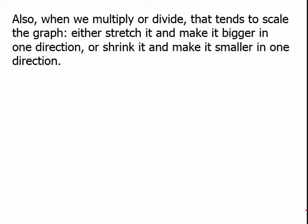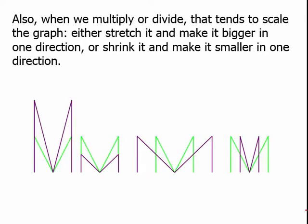When we multiply or divide, that tends to scale the graph — either stretching or shrinking it in one direction. When we add or subtract, that tends to move the unchanged shape in one direction or another. For example, in four drawings, a purple M can be a vertically stretched version, a vertically shrunk version, a horizontally stretched version, or a horizontally contracted version of the original green M.